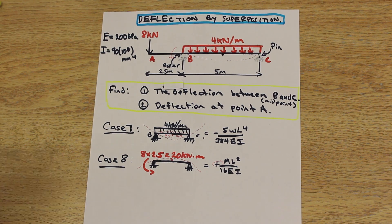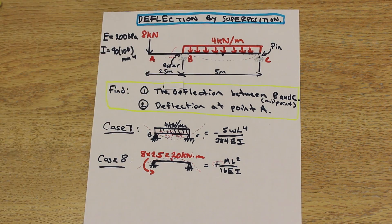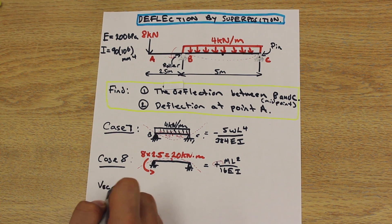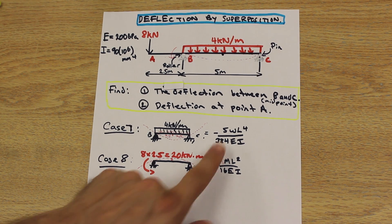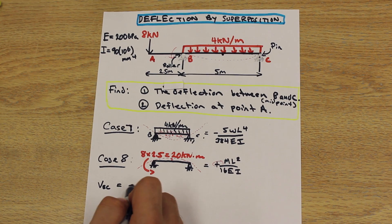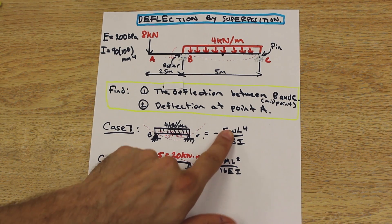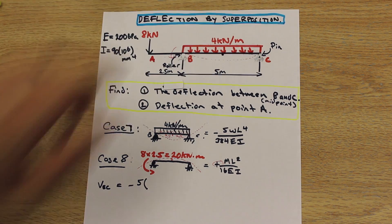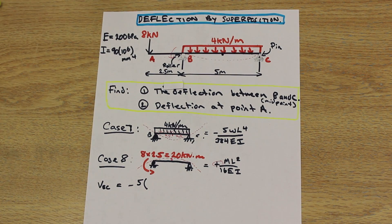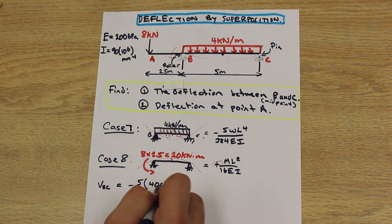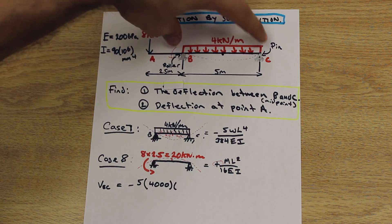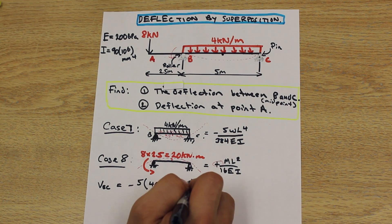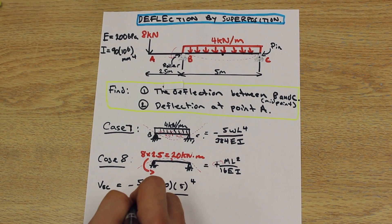So now that we have our two cases and that's it for this beam, we dealt with this force and we dealt with this distributed load, we can just start to plug in numbers. So we can say that the deflection at BC is equal to, let's use case 7. So we have negative 5. And what is our W? Well, our W refers to the value of the distributed load, which is 4 kilonewtons per meter. So let's change that kilonewtons into newtons. So we're going to say that's times 1,000, so that's 4,000. And what's the length of the beam that we're dealing with? It's 5 meters. And that's to the power of 4. And that is all over 384.